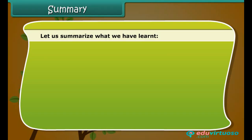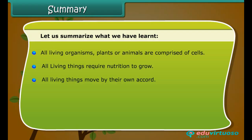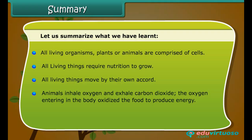Let us summarize what we have learned. All living organisms, plants or animals, are comprised of cells. All living things require nutrition to grow. All living things move by their own accord. Animals inhale oxygen and exhale carbon dioxide; the oxygen entering the body oxidizes food to produce energy. All living things have a limited life span.